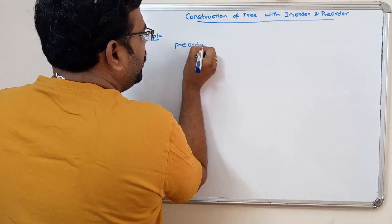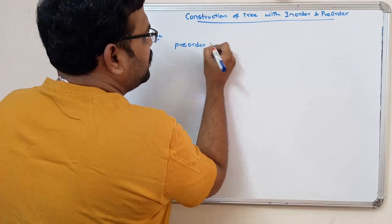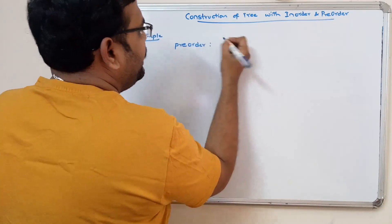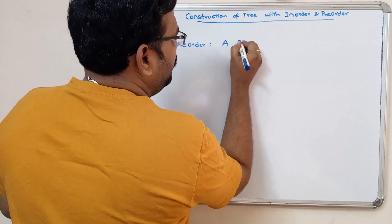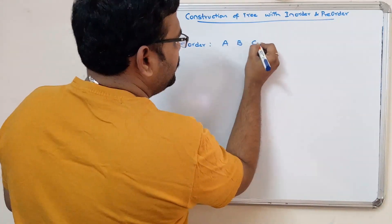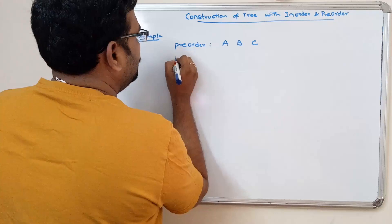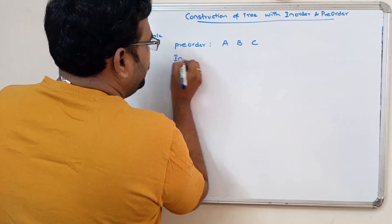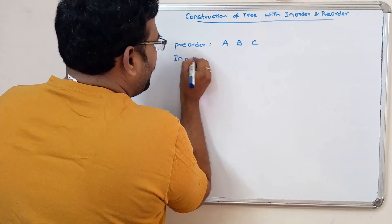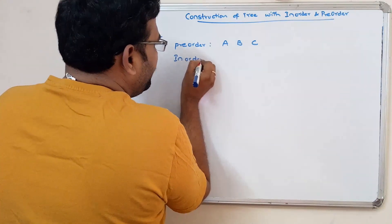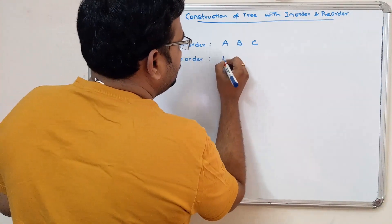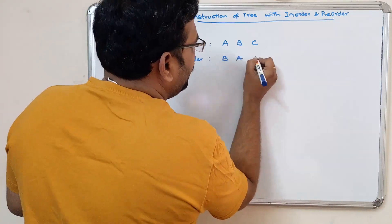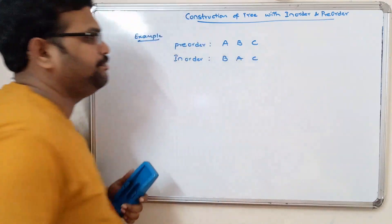The pre-order traversal of the tree is A, B, C. The in-order traversal of the tree is B, A, and C.